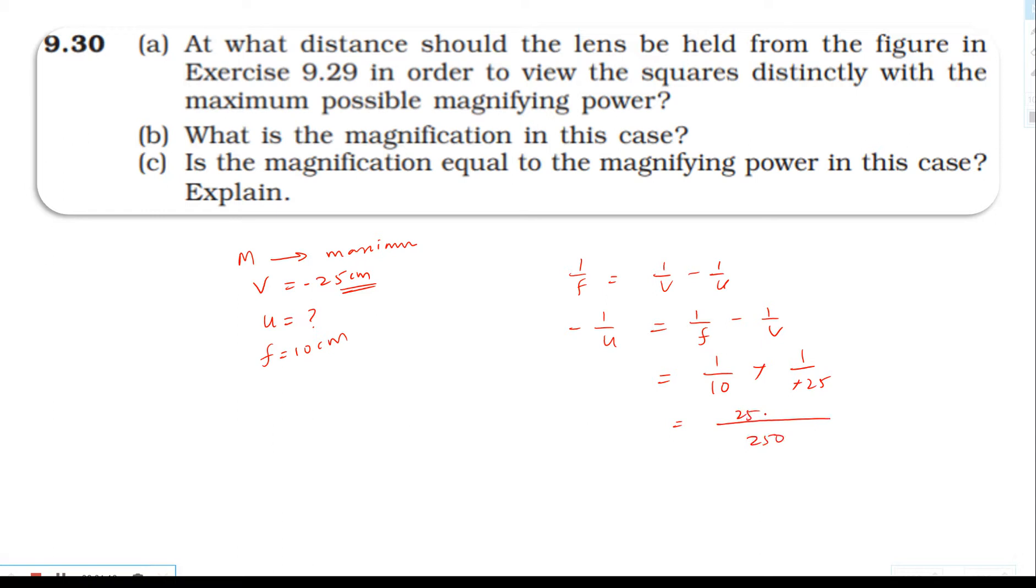So minus 1 by U calculated, and U equals minus 25 by 3.5, which is about 7.14 cm.